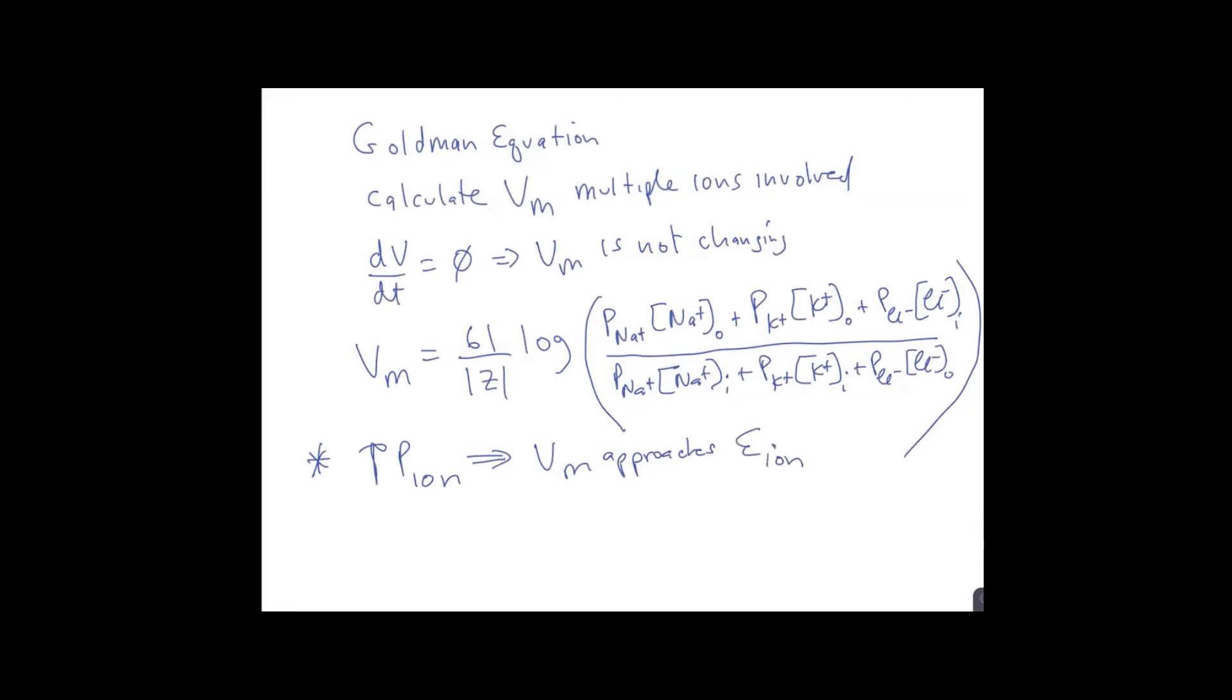And I think you could appreciate that, that if for some reason we had a very high permeability for sodium, for example, what that would do is that would make these other terms become insignificantly small. So if we took these permeabilities for sodium to a very high number, if these terms here drop out for potassium and chloride, then what essentially you end up with is the equilibrium potential for that ion.